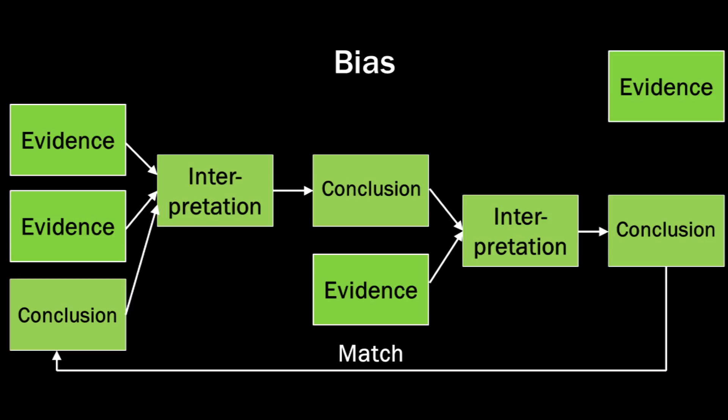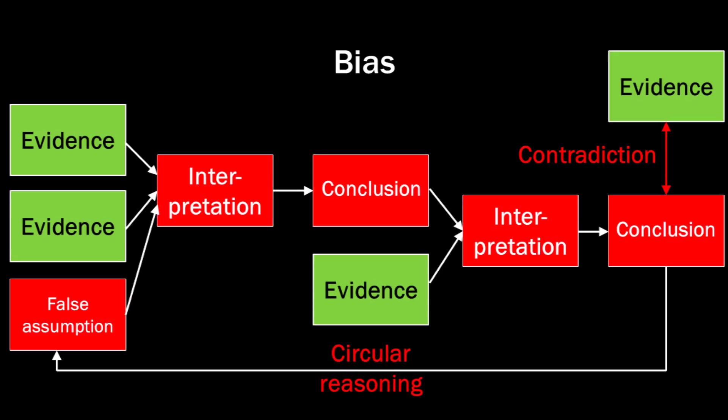But what happens when new evidence is presented to this presupposition? Evidence that contradicts the conclusion. Then the evidence is seen as an anomaly. Instead, the whole system should be considered circular reasoning and only the evidence is supposed to be considered true.